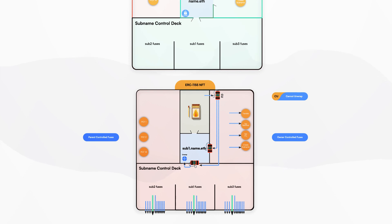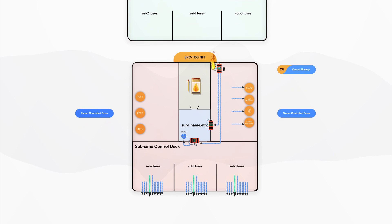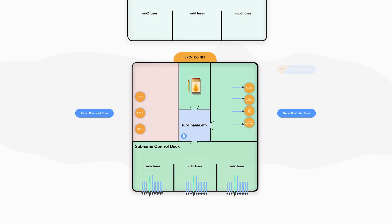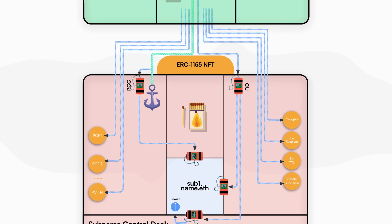The owner still cannot burn any owner-controlled fuses or fuses of its own subnames yet. To do that, you must lock the name. To lock a name, burn the Cannot Unwrap fuse. This name is now locked, meaning that it can no longer be unwrapped. After locking a name, you can now gain access to burn other owner-controlled fuses and subname fuses as well.